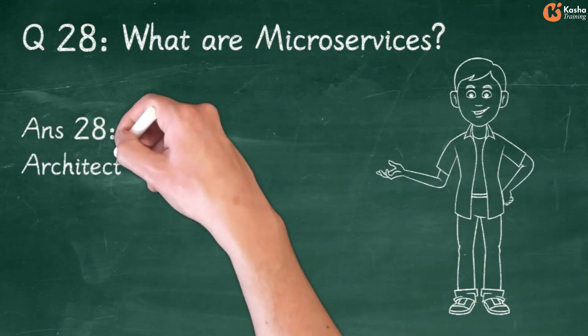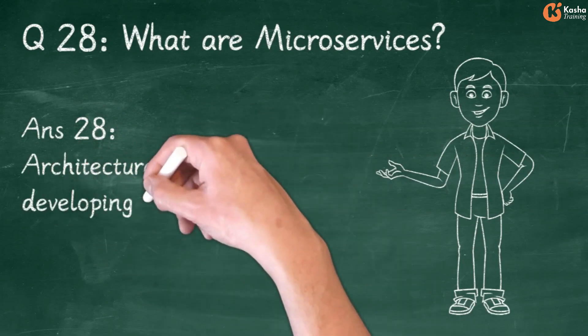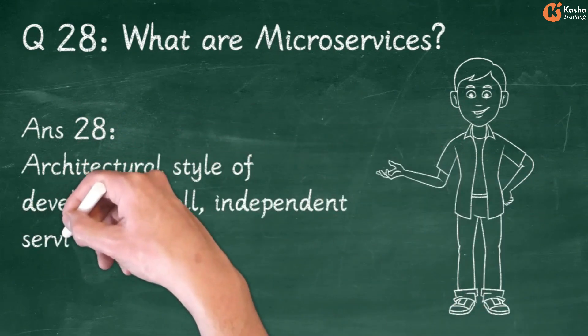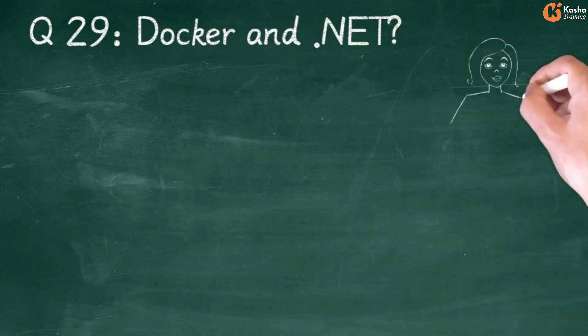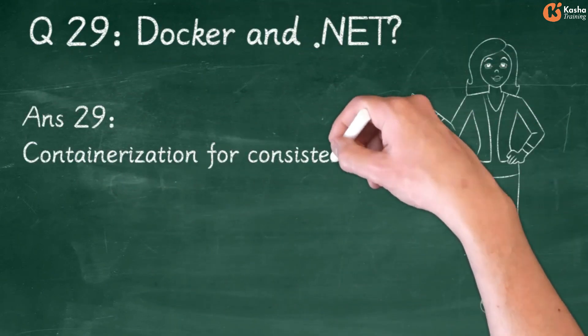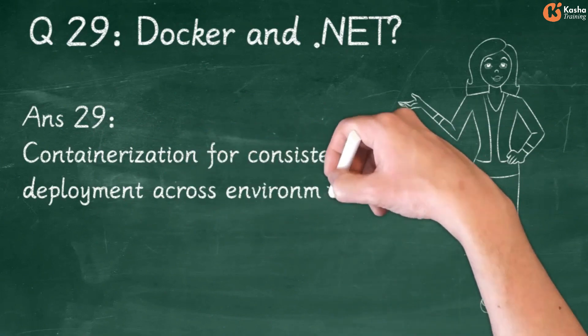Answer 28: Architectural Style of Developing Small, Independent Services. Question 29: Docker and .NET. Answer 29: Containerization for consistent deployment across environments.